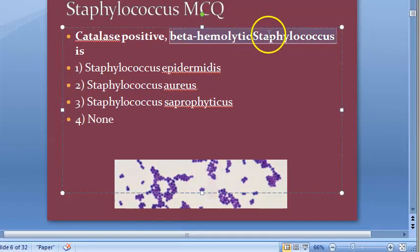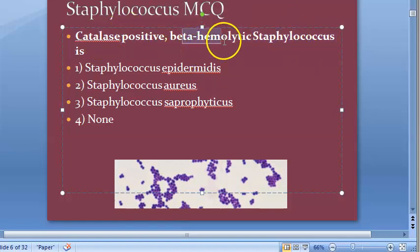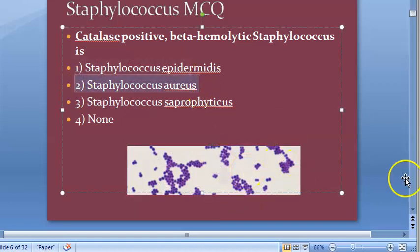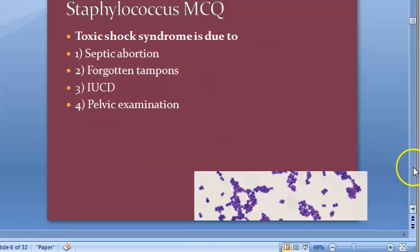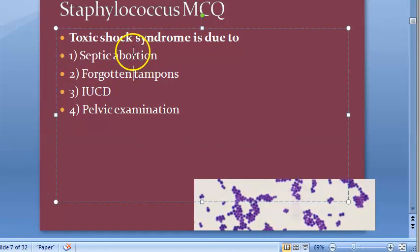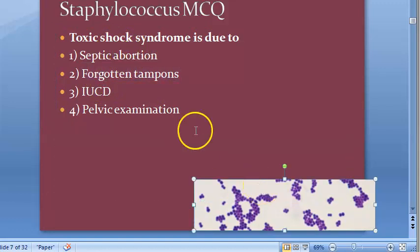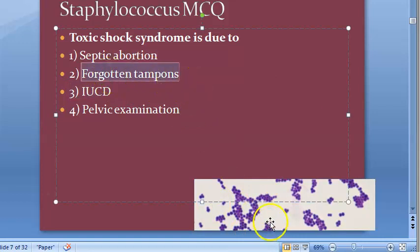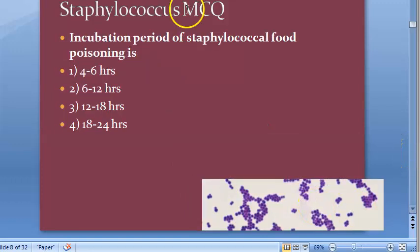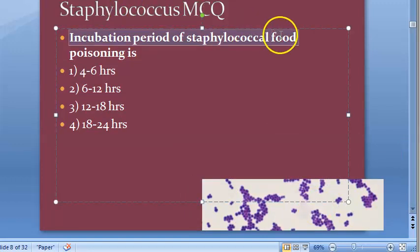Catalase positive beta-hemolytic staphylococcus — all staphylococci are catalase positive. The answer is staphylococcus aureus, which is beta-hemolytic. Toxic shock syndrome is due to forgotten tampons — that is the answer.